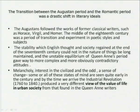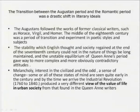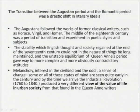While we look at the transition between the Augustan period and the Romantic period, there was a drastic shift in literary ideas. The Augustans followed the works of former classical writers such as Horace, Virgil, and Homer. The middle of the 18th century was a period of transition and experiment in poetic styles and subjects. The stability which English thought and society had regained at the end of the 17th century could not be long maintained, giving way to more complex and contradictory attitudes — a melancholy interest in the civilized and the odd.